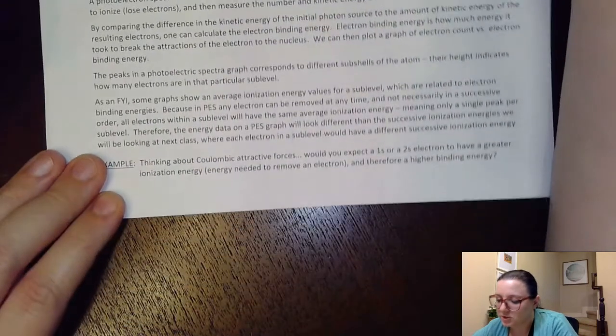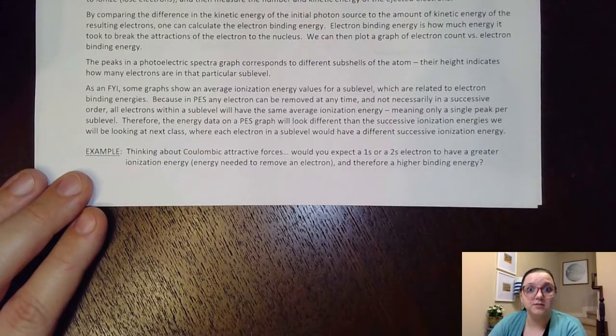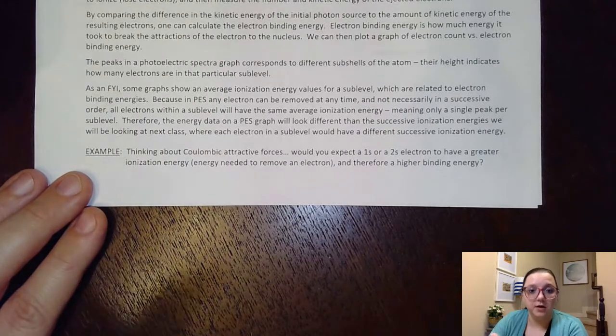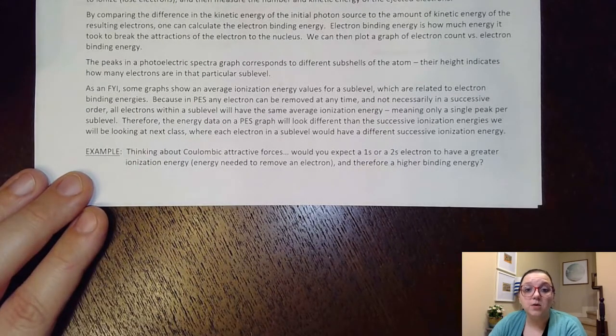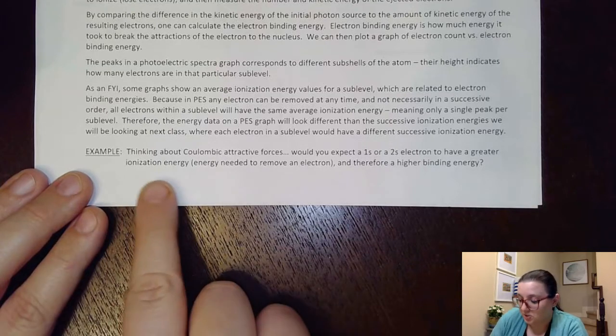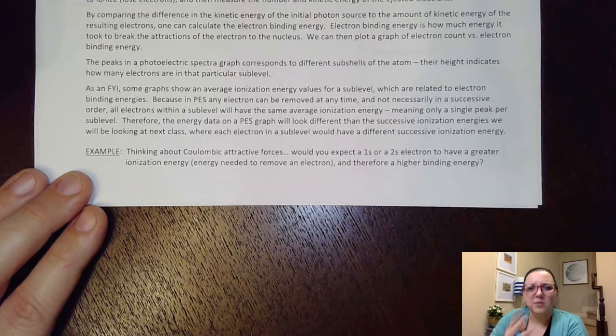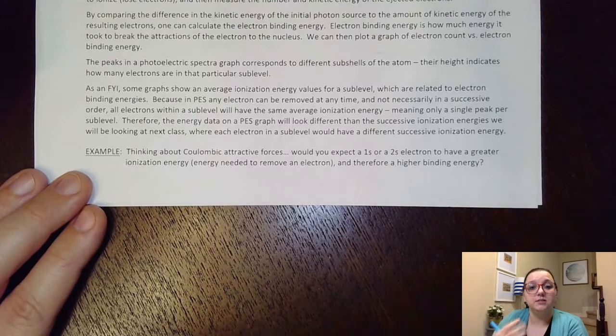Now, there's one question down here at the bottom of this. It says, thinking about Coulombic attractive forces, which we talked about when we did periodic trends, would you expect a 1s or 2s electron to have both a greater ionization energy, but also a higher binding energy? Because again, they're related, even though they're not quite the same, both of them are referencing how much energy does it take to remove.